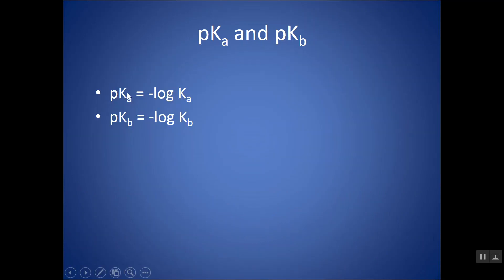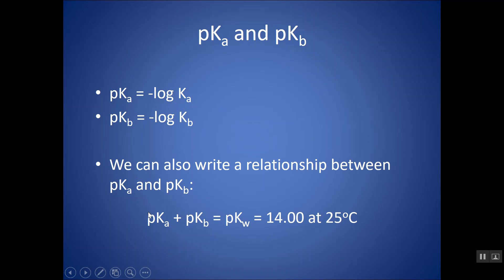You might see pKa and pKb. Remember that P in front for chemistry, you're going to be taking the negative log of that thing. So this is taking the negative log of Ka, negative log of Kb. And these two things are related because pKa plus pKb equals pKw, which would be 14.